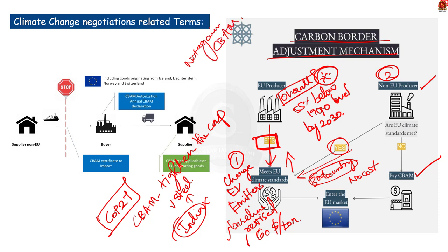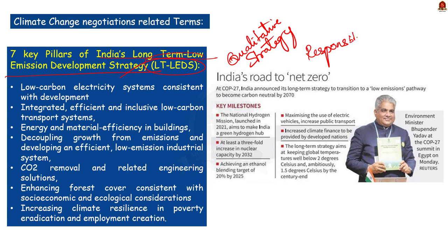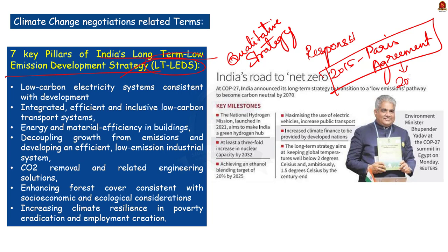At COP27, India announced its Long-Term Low-Emission Development Strategy, or LTLEDS. This is a qualitative strategy in which countries must explain how they will transform their economies beyond achieving near-term targets to reduce emissions. The strategy should be formulated based on the country's various responsibilities and capabilities per different national-level circumstances. LTLEDS originated in the 2015 Paris Agreement, which invited parties to submit the strategy by 2020. Due to COVID, the timeline was extended, and India submitted its strategy at COP27 — with seven key pillars. The Energy Conservation Amendment Bill 2022 also seeks to introduce a carbon credit market in India.